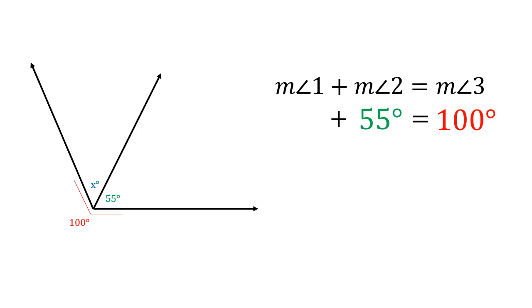We can also work in reverse. Say we're trying to figure out what one of the smaller angles is. We just manipulate that equation by taking the total, the larger angle, in this case 100 degrees, and subtracting the smaller one that we know. Whatever's left has to be the measure of that missing angle.